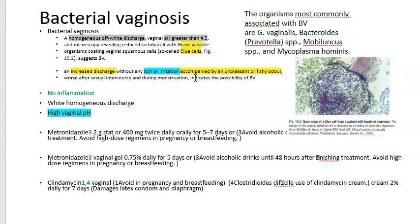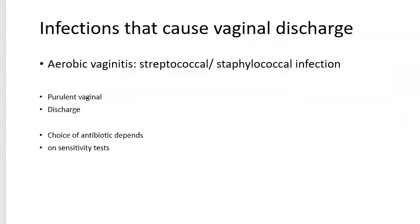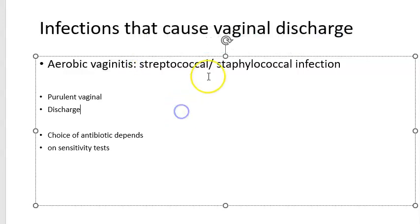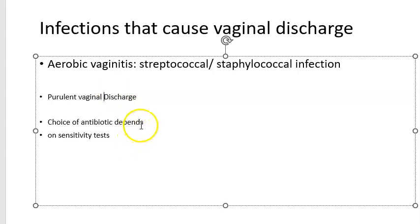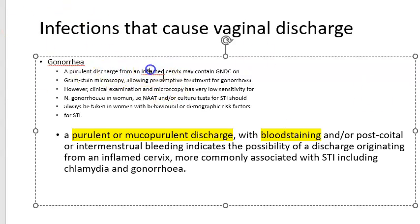Aerobic vaginitis involves streptococcal and staphylococcal infections. It presents with purulent vaginal discharge — pus-like because of the aerobic bacteria. An antibiotic sensitivity test should be done and treatment guided accordingly.